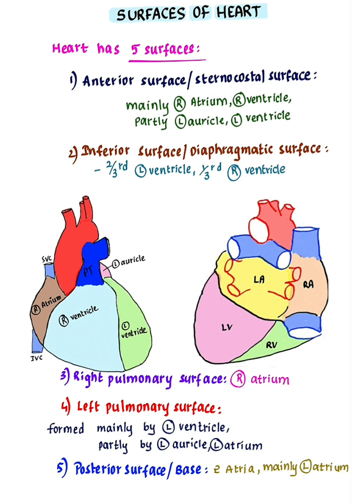To summarize: sternocostal surface is mainly formed by right atrium and right ventricle, partly by left auricle and left ventricle. Inferior surface is two-thirds left ventricle and one-third right ventricle. Right pulmonary surface is formed by right atrium. Left pulmonary surface is mainly left ventricle, partly left auricle and left atrium. Posterior surface or base is formed by 2 atria, mainly left atrium.